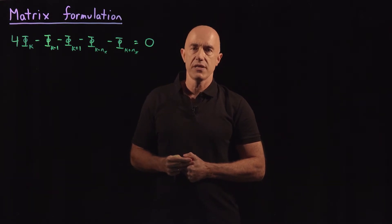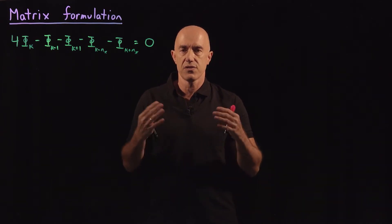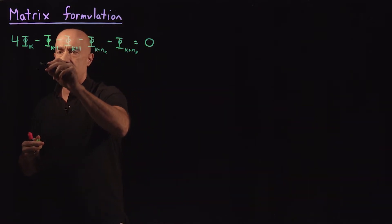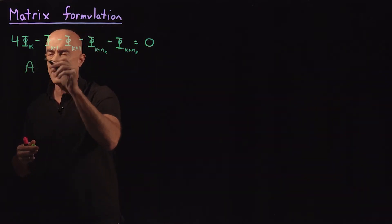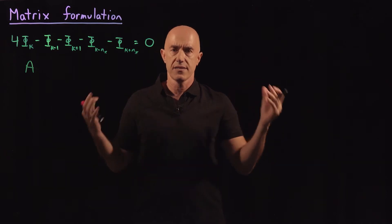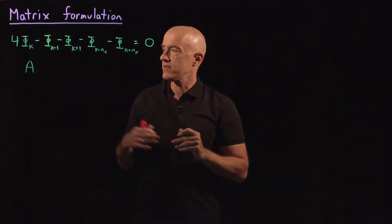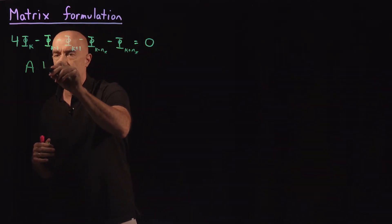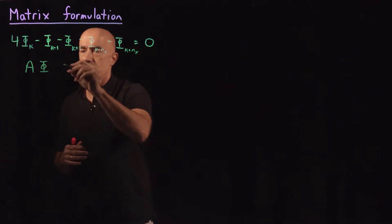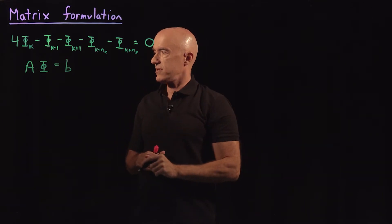This is a matrix equation, and I want to show you how to use this discrete Laplace equation to construct a matrix. We're looking for an equation that looks like some large matrix — this will be nx times ny by nx times ny size. If it's a square matrix, it would be nx squared by nx squared, which is a very large matrix. This times a column vector of our solution phi equals some right-hand side b. So that's our goal: to write this matrix equation.